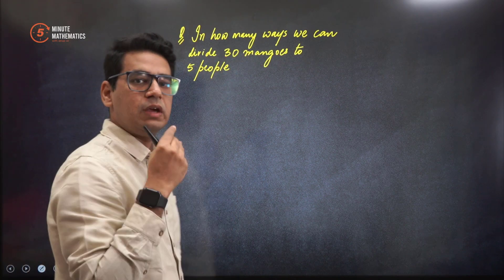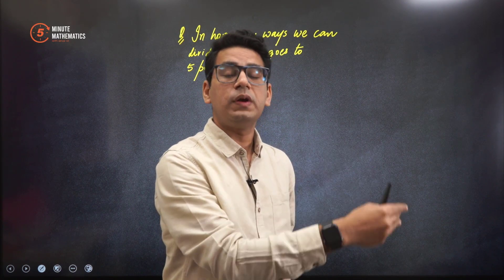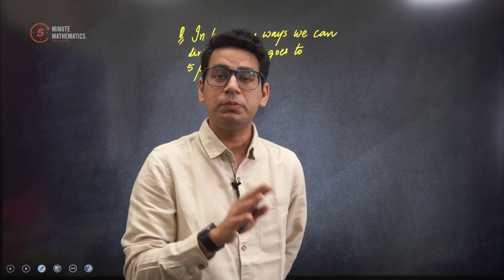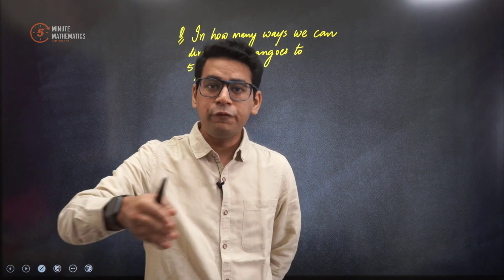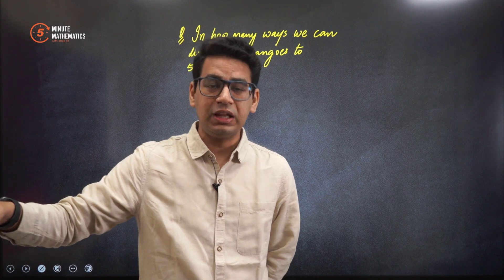30 mangoes could be given to... all the 30 mangoes can be given to one particular person. This could be one of the possible ways of dividing it. It could be possible that the 30 mangoes are divided in 4 and the fifth person doesn't get anything.